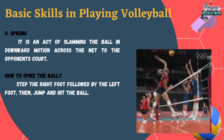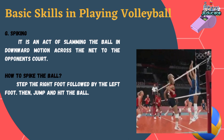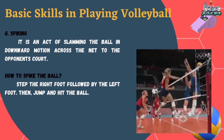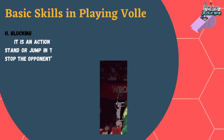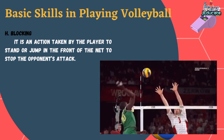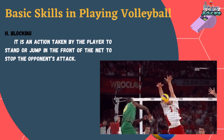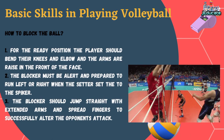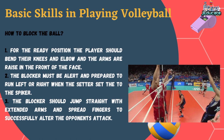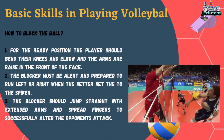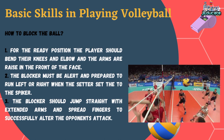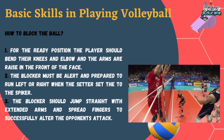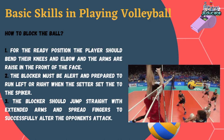Letter G, Spiking — it is an act of slamming the ball in a downward motion across the net into the opponent's court. How to spike the ball: step the right foot followed by the left foot, then jump and hit the ball. Letter H, Blocking — it is an action taken by the player to stand or jump in front of the net to stop the opponent's attack. How to block the ball: Number 1, for the ready position the player should bend their knees and elbows, and the arms are raised in front of the face. Number 2, the blocker must be alert and prepared to run left or right when the setter sets the ball to the spiker. Number 3, the blocker should jump straight with extended arms and spread fingers to successfully alter the opponent's attack.